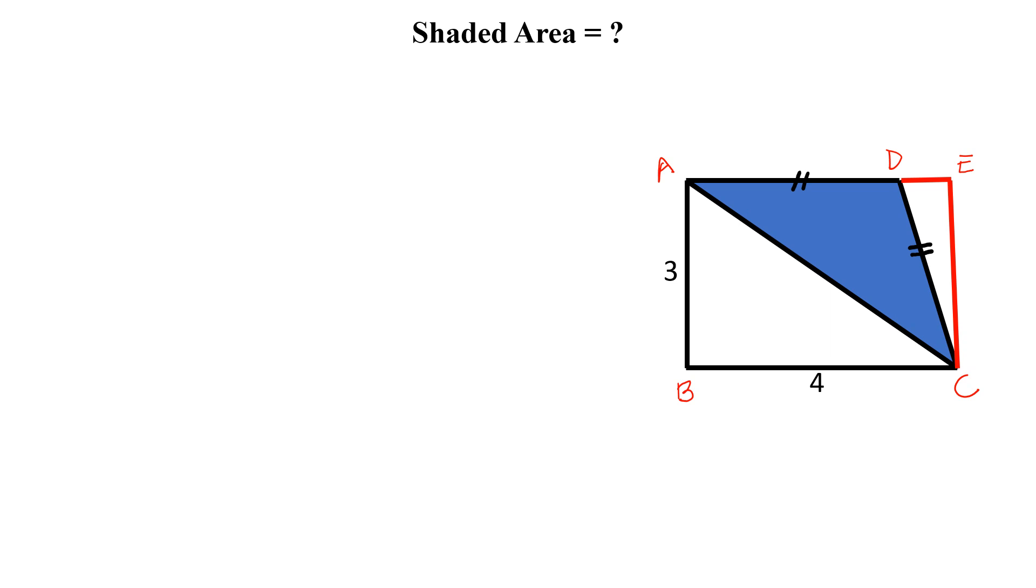By Pythagoras theorem, this length is 3 and this is 4, so this length will be 5. Let this be the height of this triangle and we know that this is the base. So if we can find the height, then we can calculate the shaded area.